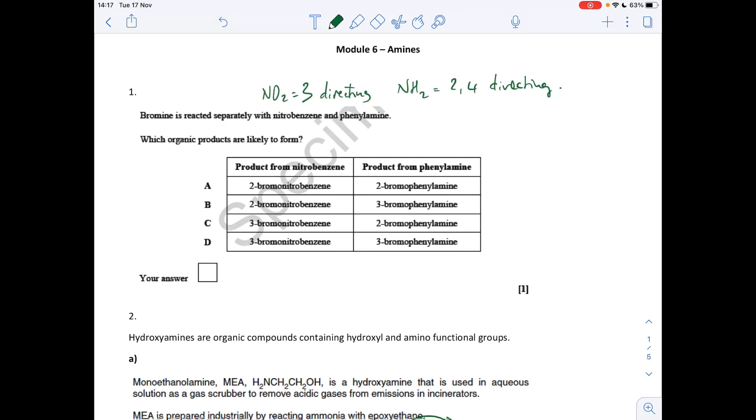Okay, so the first question tests your knowledge of directing groups. You can see I've written up there, NO2 is a 3 directing group, and NH2 is a 2,4 directing group. So the correct answer there is C.